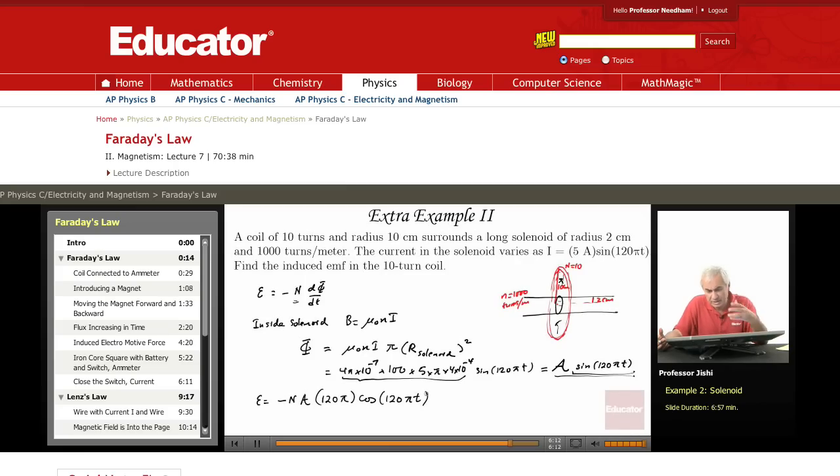So the only issue here is, just to be careful, is that you're looking at the flux through the big coil, but the magnetic field exists only inside the solenoid. And it's constant.